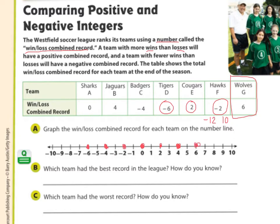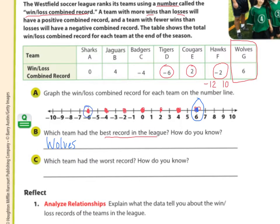Who had the best record in the league? That would be the dot furthest to the right — the greatest number — and that belongs to the Wolves. Which team had the worst record? That would be the team furthest to the left, the smallest number. Their losing games were way more than their wins. That would be the Tigers, because theirs is the dot farthest to the left.